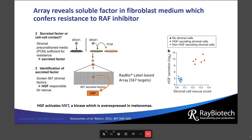They then asked: is the stromal cell rescue of cancer cells mediated by direct cell-cell contact, or is there a soluble factor causing it? What they found is that preconditioned medium from stromal fibroblasts was indeed sufficient to keep melanoma cells alive in the presence of a RAF inhibitor. The question then became: what is in that preconditioned medium? They used a large 567-target label-based array to find out, and observed that HGF, or hepatocyte growth factor, was most commonly associated with drug resistance in various different stromal cell lines.